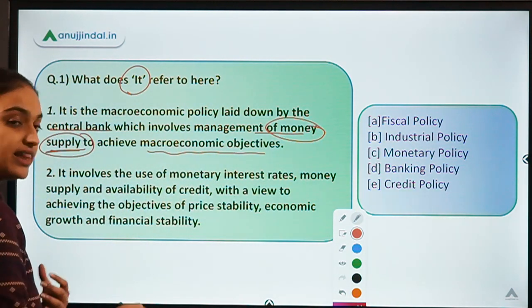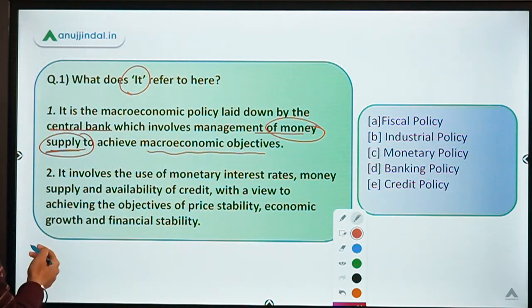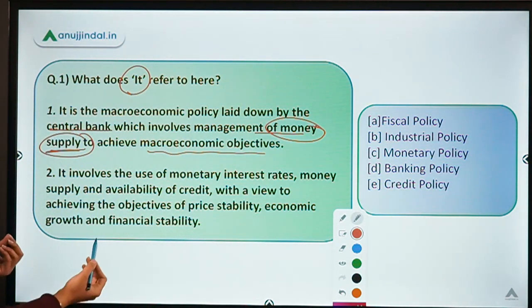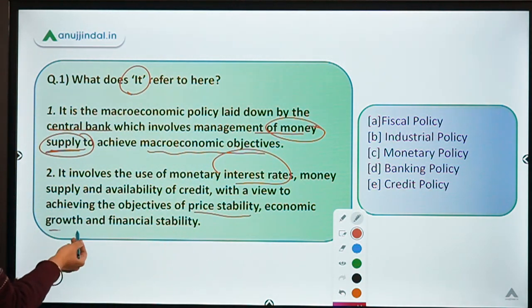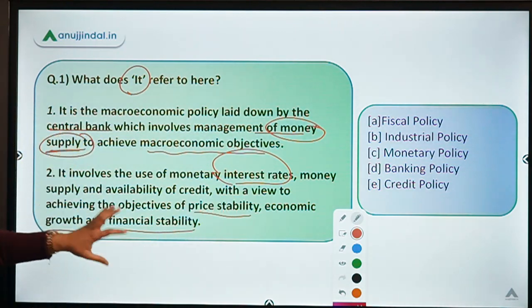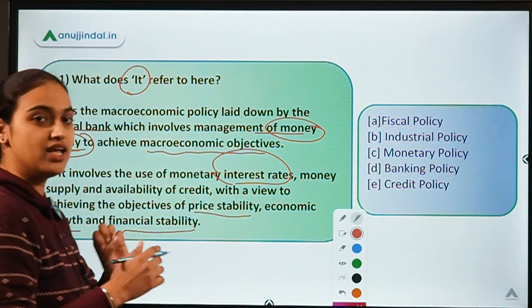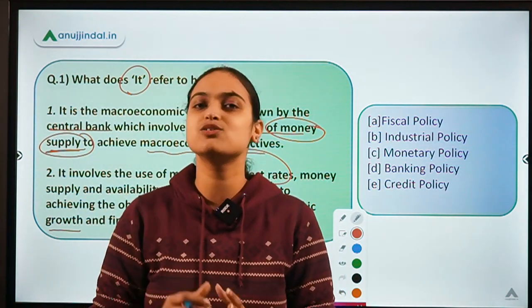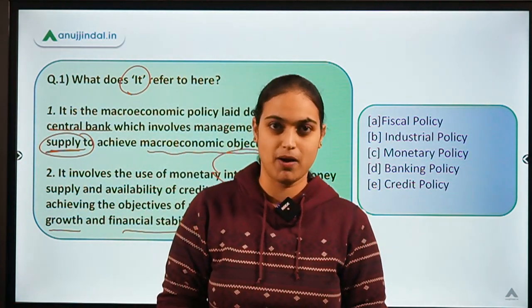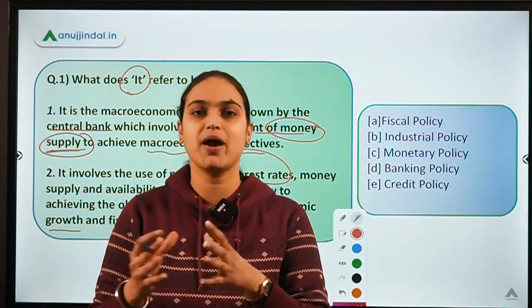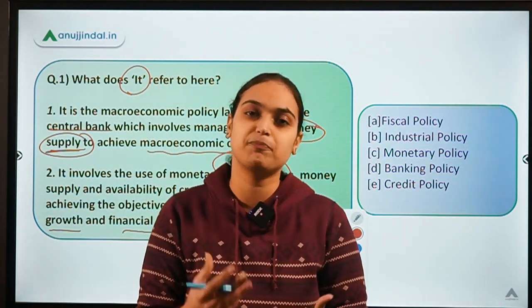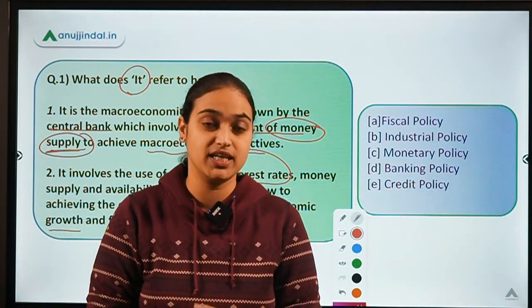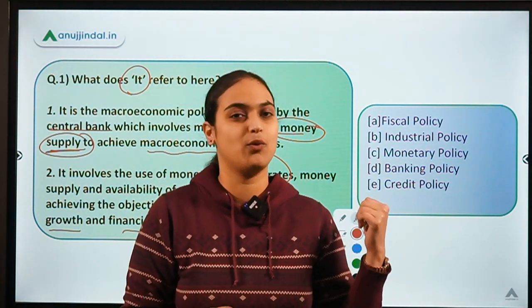The second statement says: it involves the use of monetary interest rates, the money supply, and the availability of credit with the view of achieving the objectives of price stability, economic growth and financial stability. These two highlighted things are important. This policy is framed by the central bank or the government of India to manage the supply of money — how much should be the supply of money and how to regulate it.